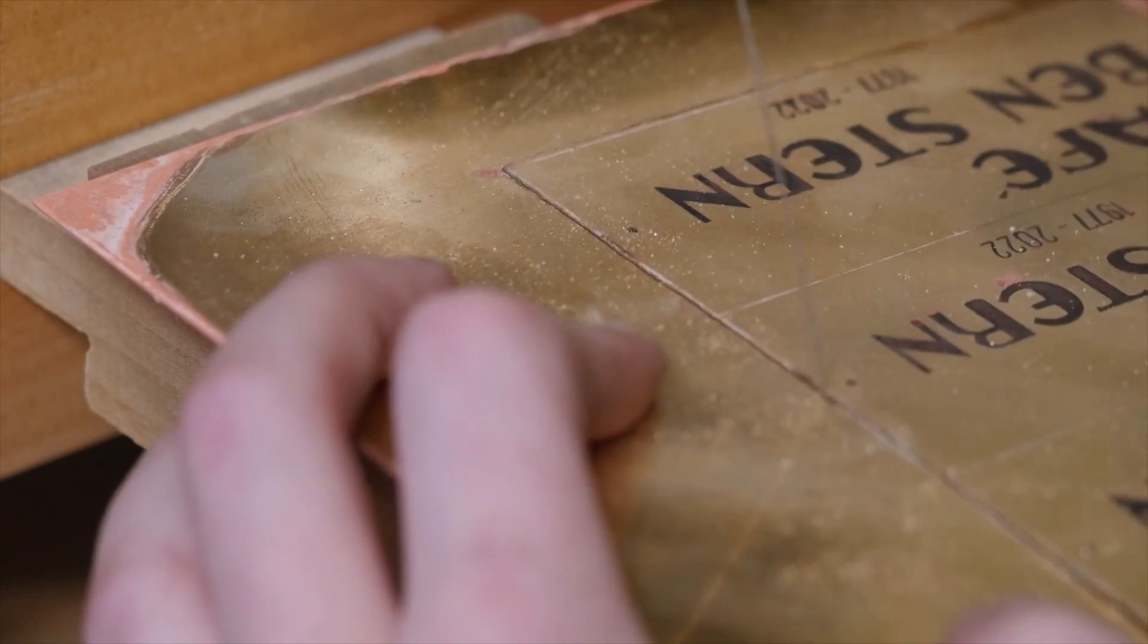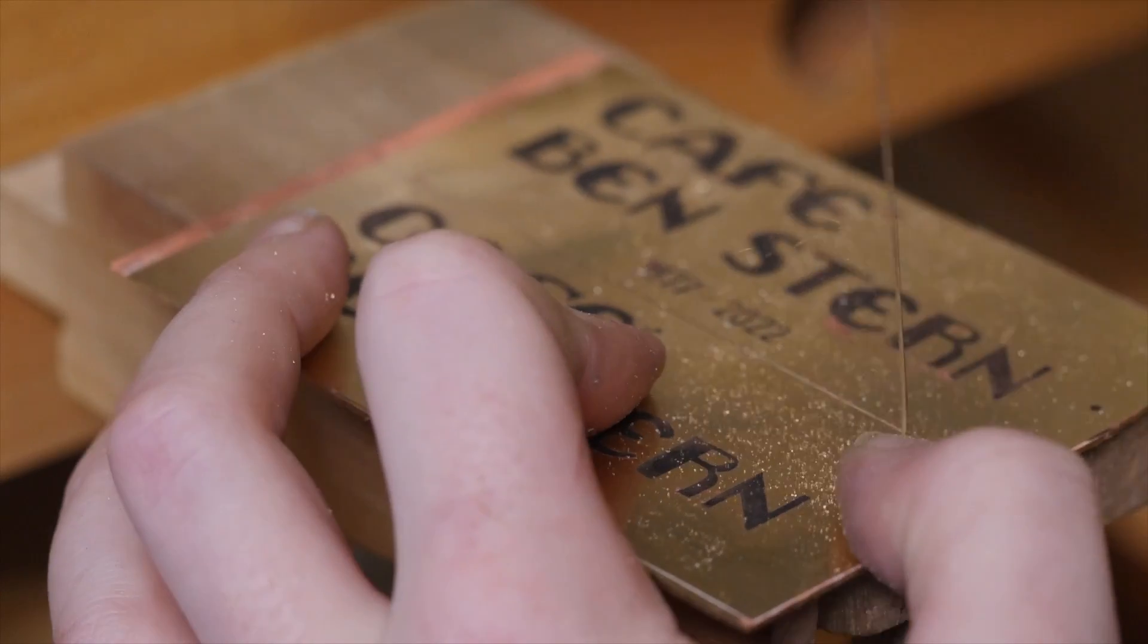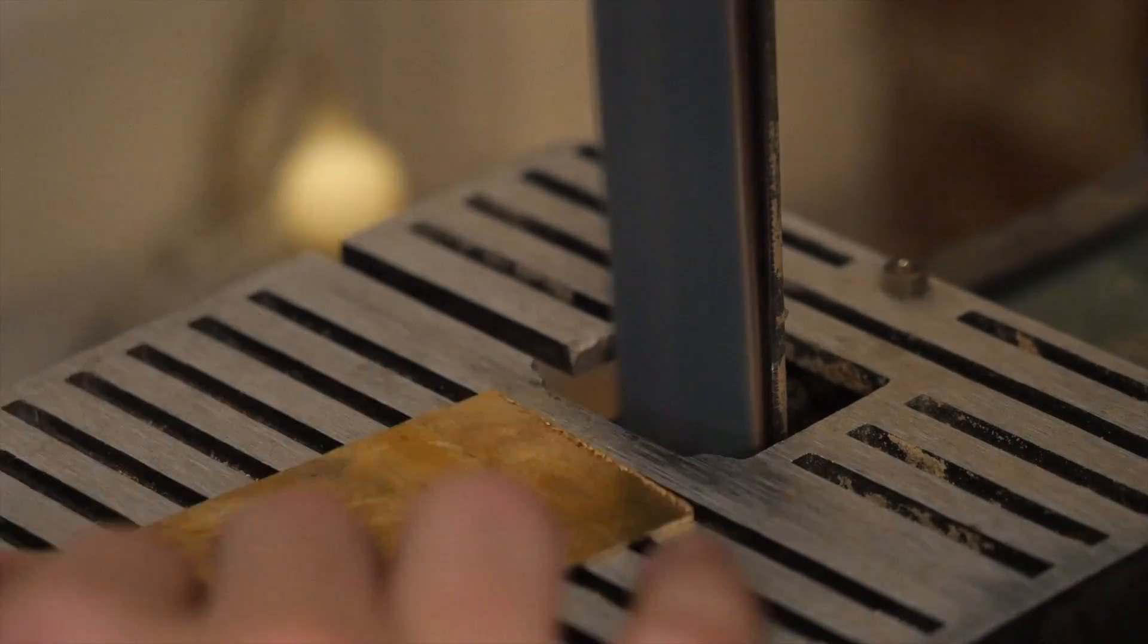I cut out the smaller plaques with my jeweler's saw and cleaned them up with my belt sander before drilling the mounting holes.